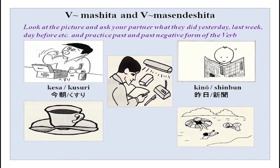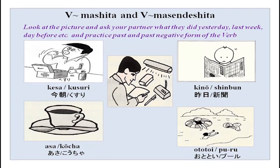Kinou shinbun wo yomimashita ka? Hai, shinbun wo yomimashita. You have the kocha here — the cup is full. Asa kocha wo nomimashita ka? Iie, nomimasen deshita. Then we have ototoi — puuru de asobimashita ka? Hai, asobimashita. Or if they did not play, asobimasen deshita. Benkyou suru — kinou benkyou shimashita ka? Hai, benkyou shimashita. If you did not, benkyou shimasen deshita.